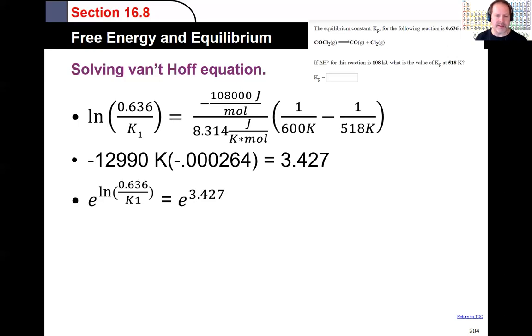And then there's a little awkward way to do it, but I kind of do it piecemeal. I did the delta H divided by R. That gave me 12990. And then I did the 1 over 600 minus 1 over 518 and gave me this in the parentheses. And so the whole right side simplifies to 3.427.